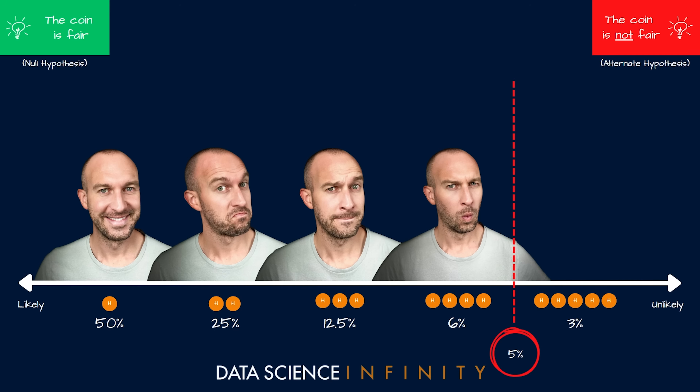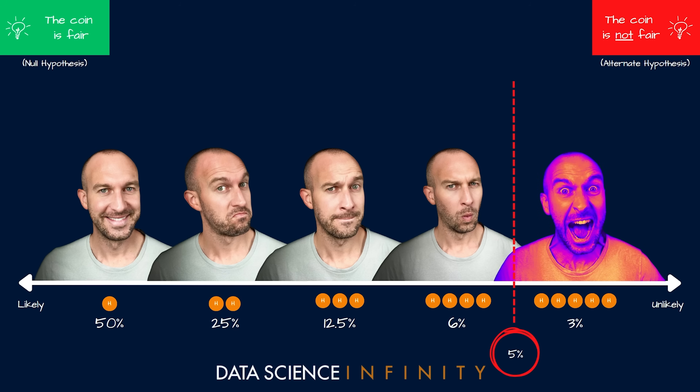Then Pete flips another head — five heads in a row — and this goes past the initial threshold I set. If this coin truly was fair, getting five heads in a row is super unlikely — less likely than I'm happy to accept. Because of that, I now really doubt the initial assumption that the coin was fair, and I start to be much more comfortable with the opposing assumption that the coin is actually rigged.